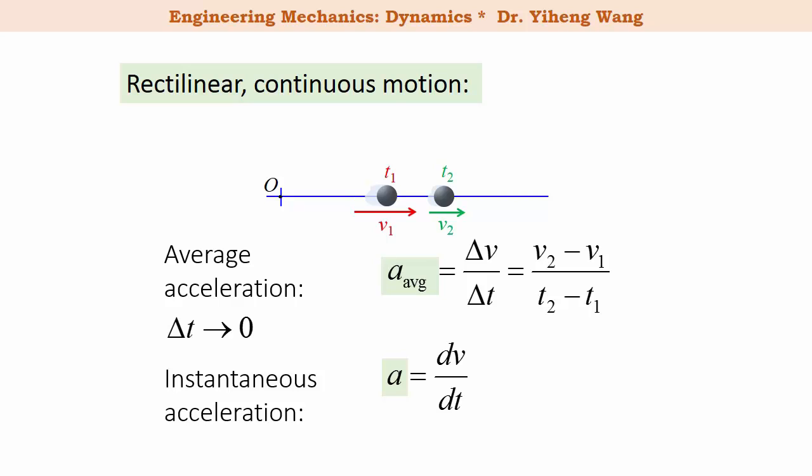And since velocity is the time derivative of position, acceleration is also the second derivative of position with respect to time. When the acceleration vector is in the same direction as velocity, it is known as acceleration since the magnitude of velocity is increasing, versus when the acceleration vector is in the opposite direction of velocity, it is known as deceleration since the magnitude of velocity is decreasing.